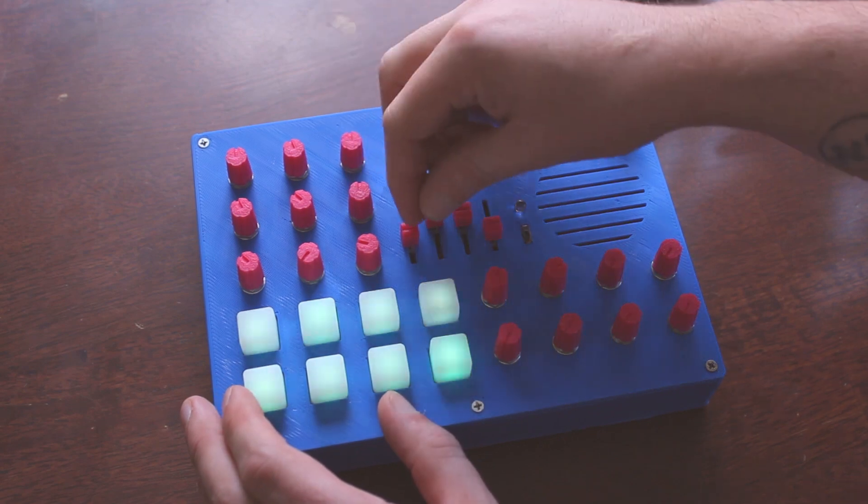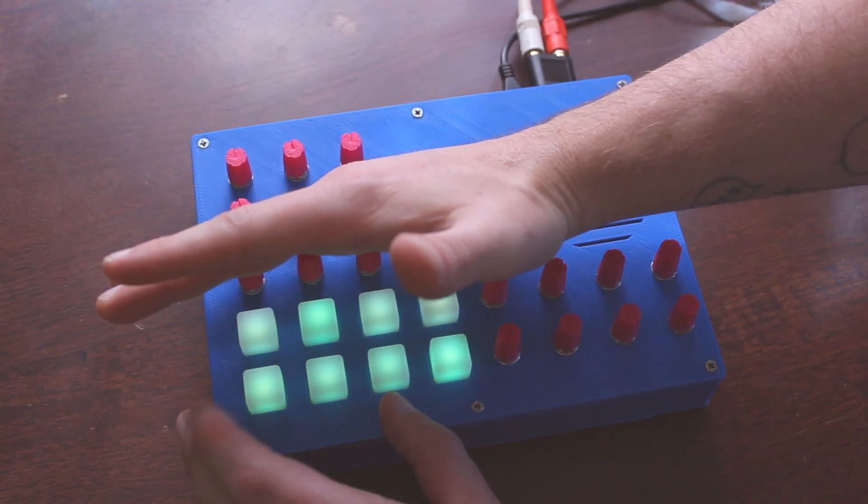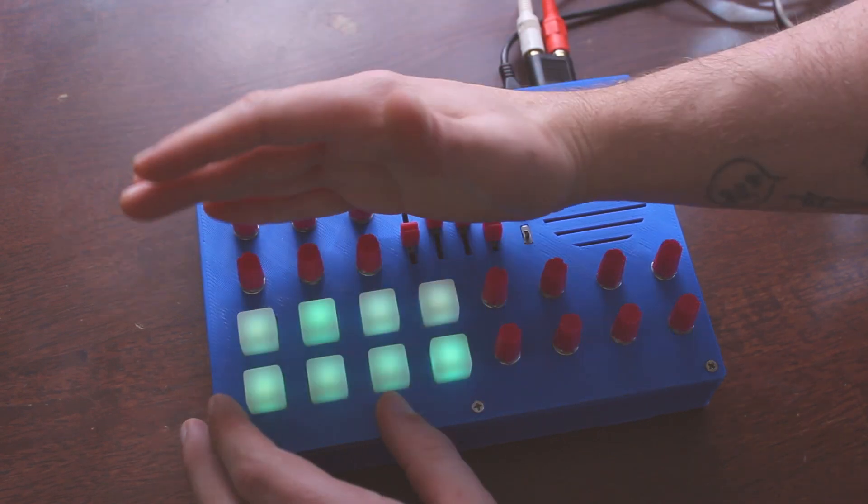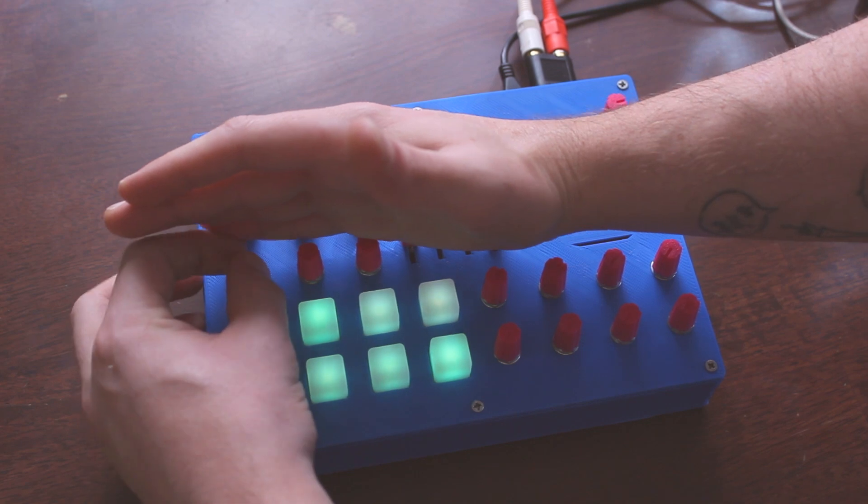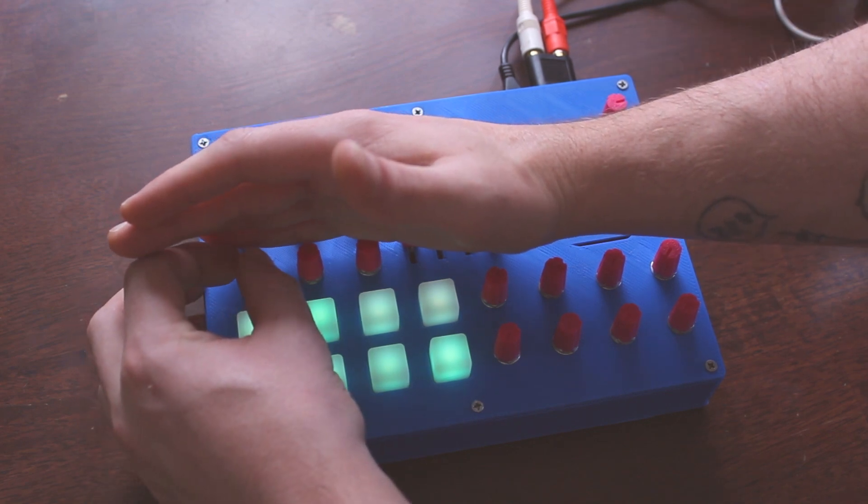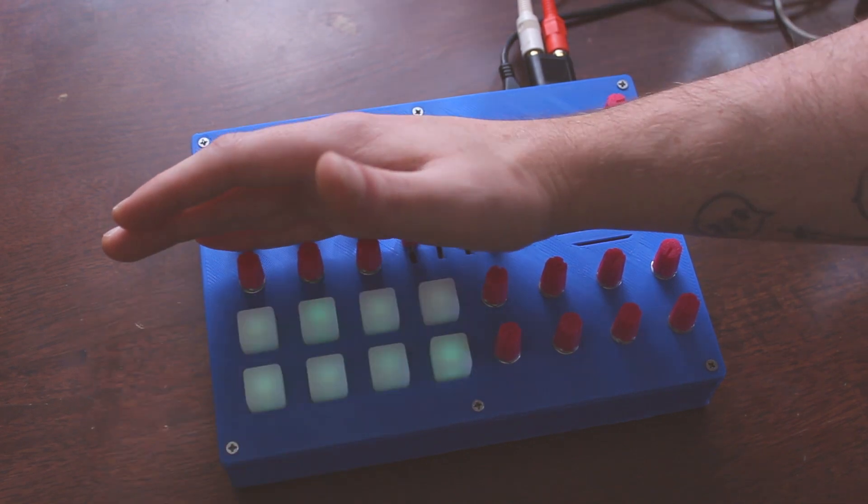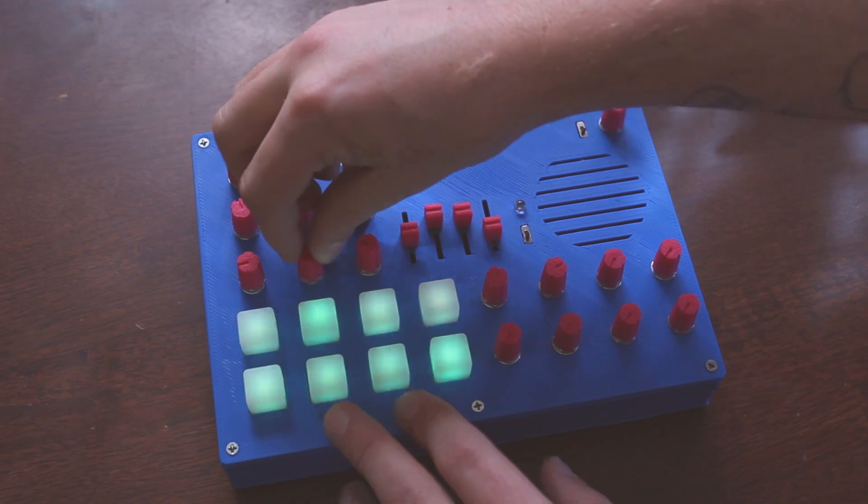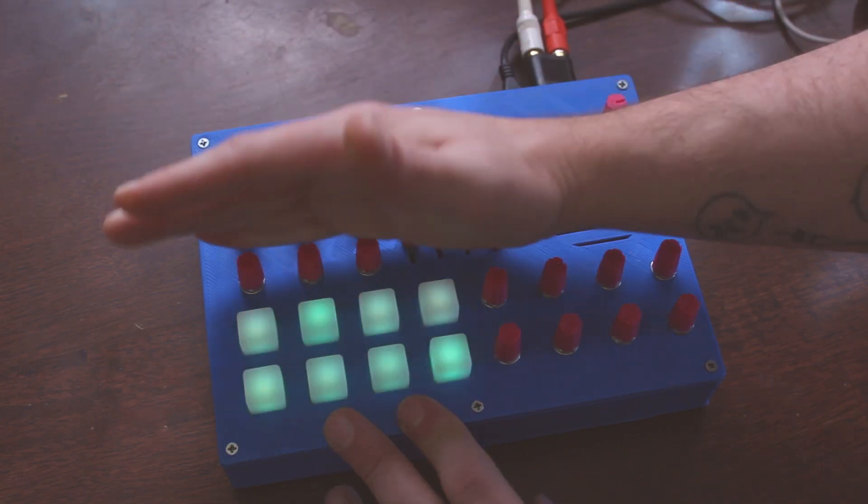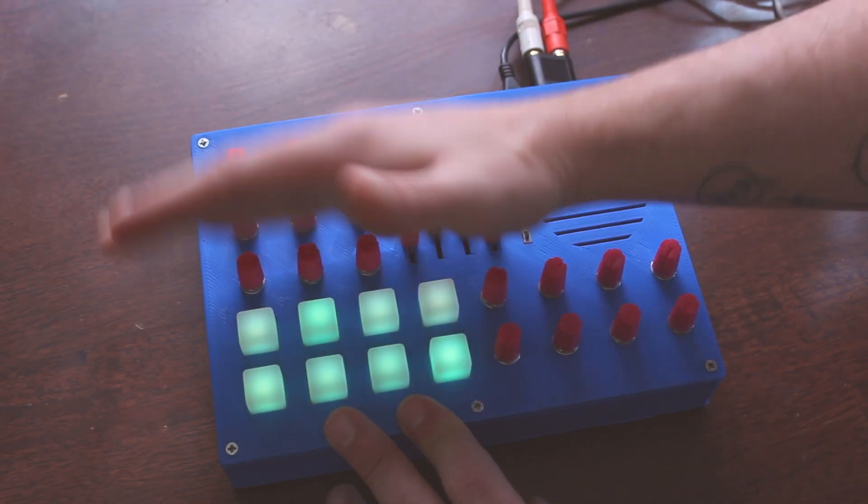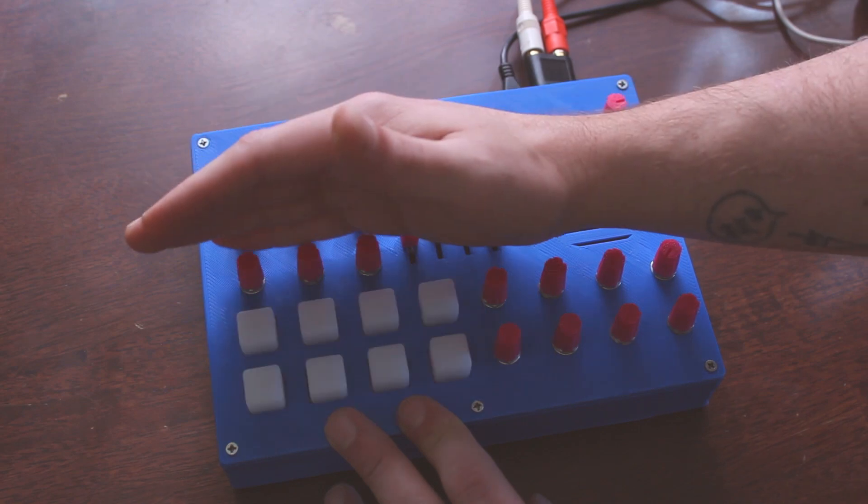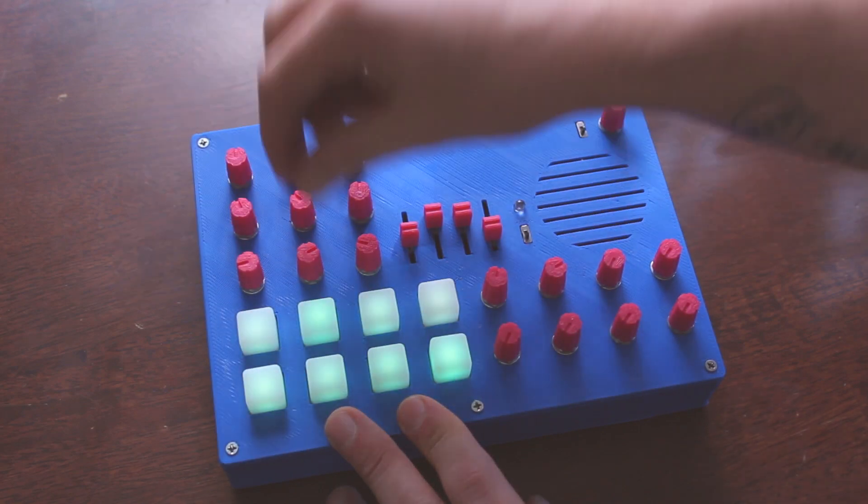I should also mention the LEDs here actually are responding to the LFO. So, the speed of the LFO, and then also the shape. If we change the shape, you can kind of see that - the sawtooth reversed, and a square there, and so on.